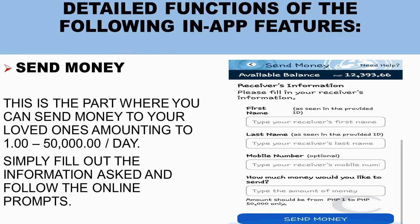Next is the Send Money button. This is where you can send 1 peso to 50,000 pesos to your loved ones per day. Just fill out the information asked on screen and follow the prompts — enter the first name, last name, and cellphone number of the recipient, plus how much you're sending. Take note: if your name has an extension like Senior or Junior, you must indicate it in the first name field, as there are cases where the branch cannot release the money because the ID shows Junior or Senior but it was left out when sending.